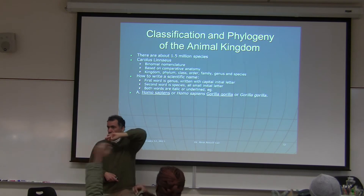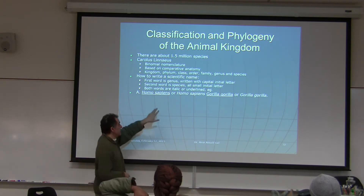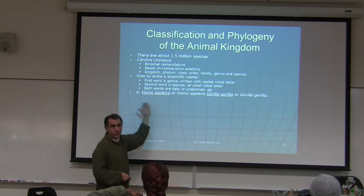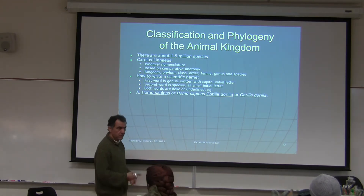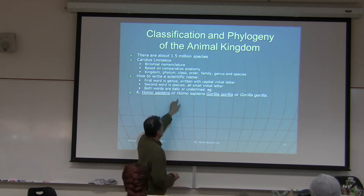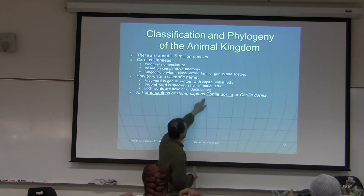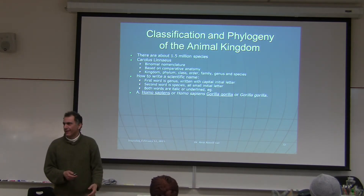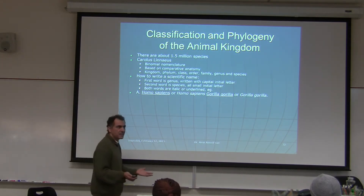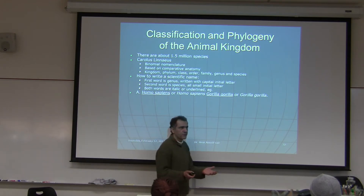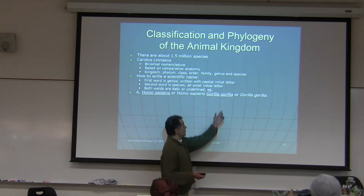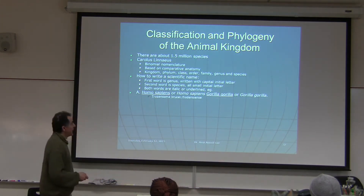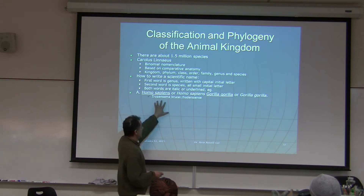During the exam, you cannot italicize because only typed words are italicized. So for handwritten scientific names, you must underline them. If you write a small 'h' or don't underline, points will be taken off. Gorilla gorilla, for instance, is the scientific name for a gorilla — sometimes the genus and species name are the same word.